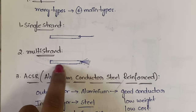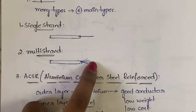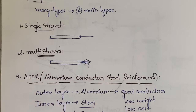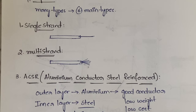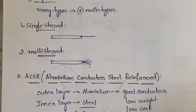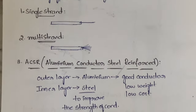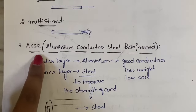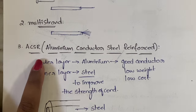The next type is multi-strand. In multi-strand, inside a single wire you will have many strands — many copper wires folded and twisted together, kept inside a single wire. That is called a multi-strand wire.